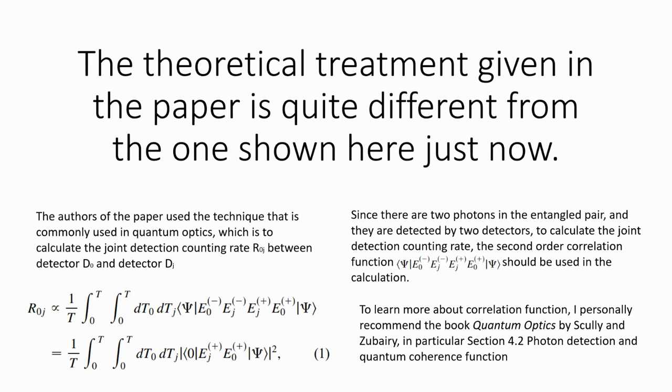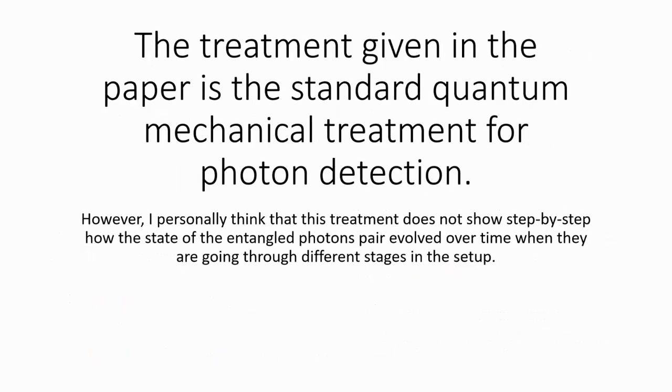For people who wants to learn more about correlation functions, I recommend the book Quantum Optics by Scully and Zubairi, in particular section 4.2. This treatment, as far as I know, is the standard quantum mechanical treatment for photon detection. However, I think it is more helpful to show step by step how the state of the photons evolves in different stages.